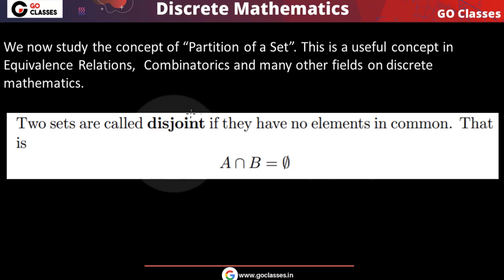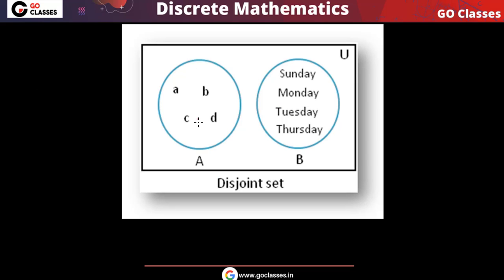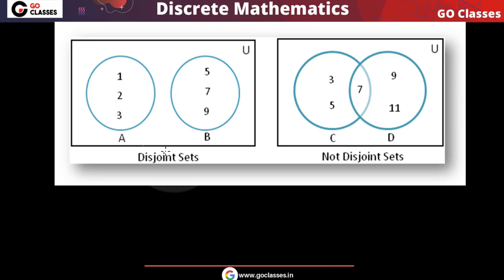Let's see the definition of disjoint sets. When can I say that two sets are disjoint? Two sets are disjoint if they do not have any common element — their intersection is φ (empty set). For example, set A and set B have no common element, so A ∩ B = φ.